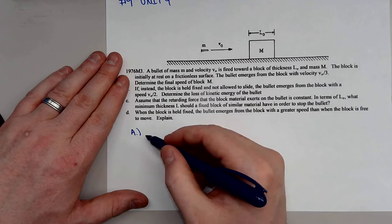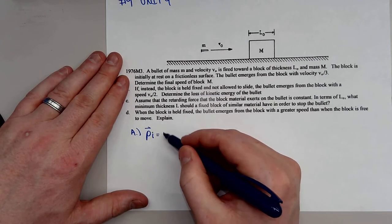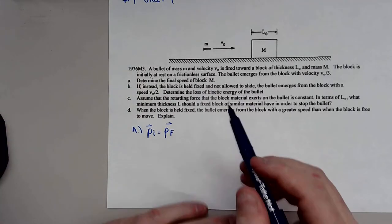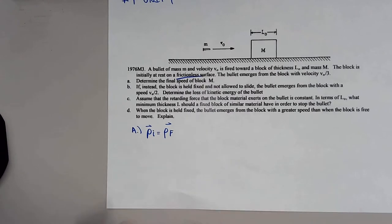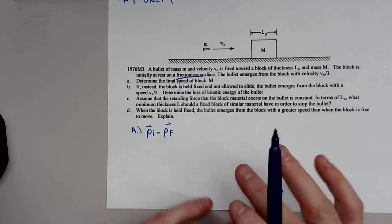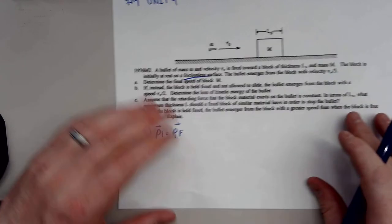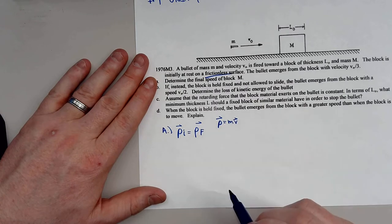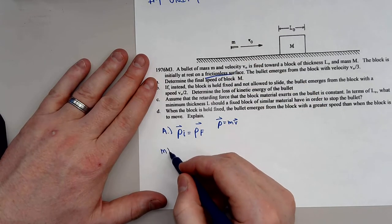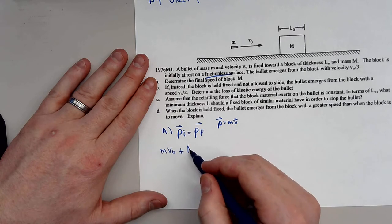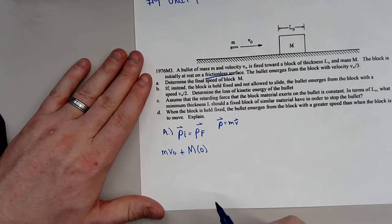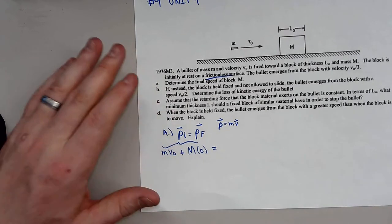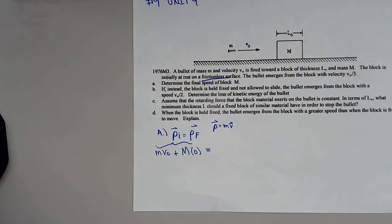In this situation, the momentum before the collision has to equal the momentum final — this is an inelastic collision. The frictionless surface is very important: that means momentum is conserved. It doesn't matter what type of collision, momentum is conserved. Momentum is just mass times velocity. So the initial momentum is little m times V naught, plus big M times zero.